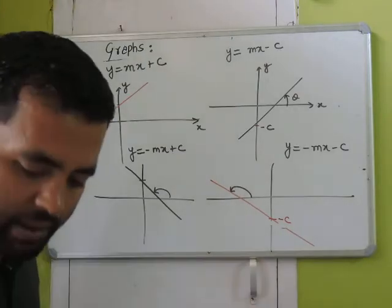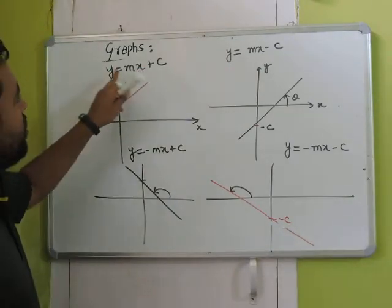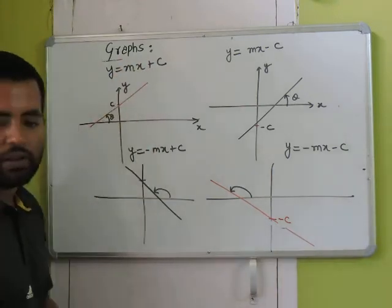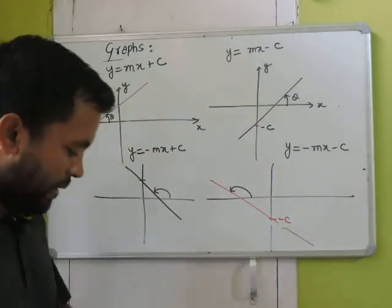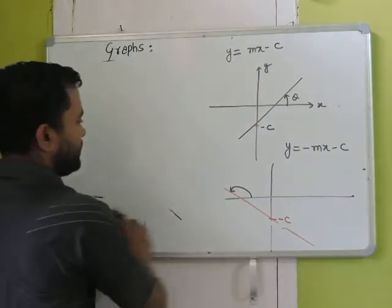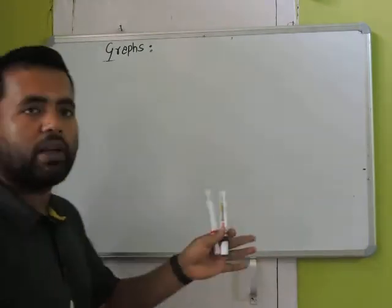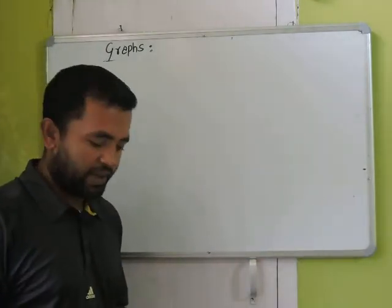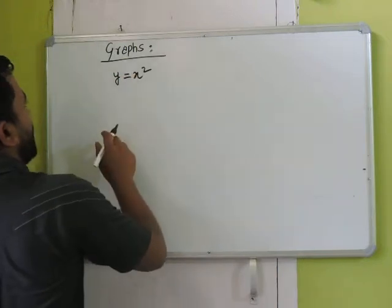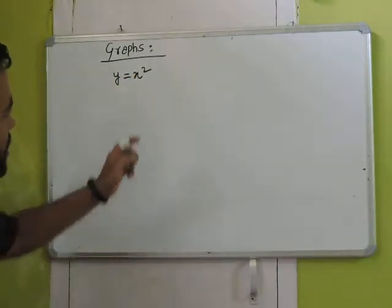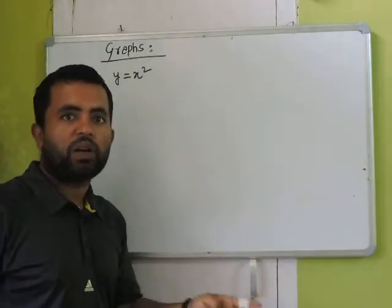Any equation in which x has power 1 only will represent a straight line. Moving on, if you have y equal to x square, this will not represent a straight line. Any equation where x has a power other than 1 will not represent a straight line. For y = x², if x is 0, y is 0. If x is positive, y is positive; if x is negative, y is still positive. So this gives a parabola symmetric about the y-axis.